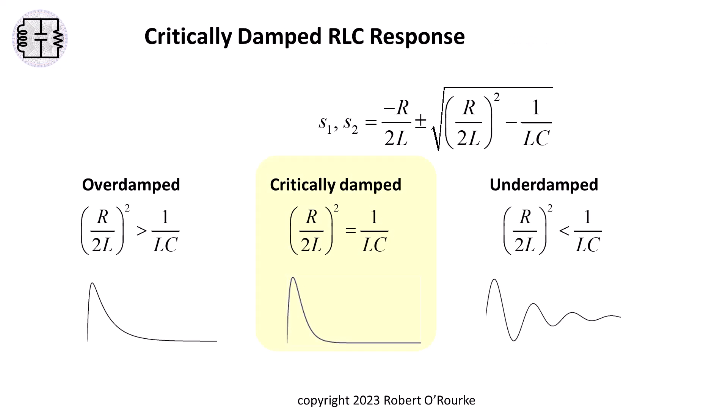In the critically damped response, the quantity under the square root sign becomes zero and S1 and S2 are equal.